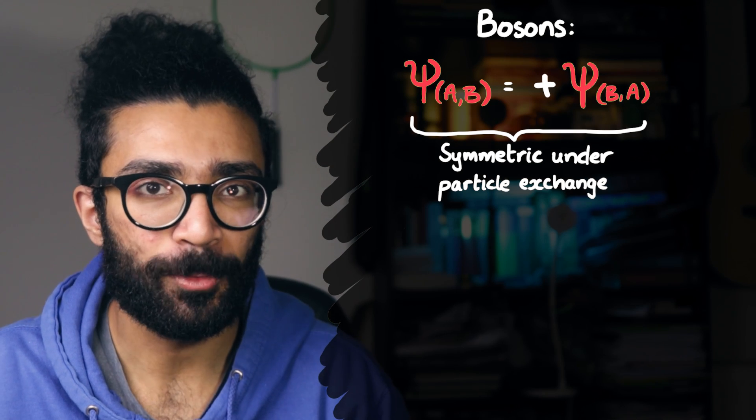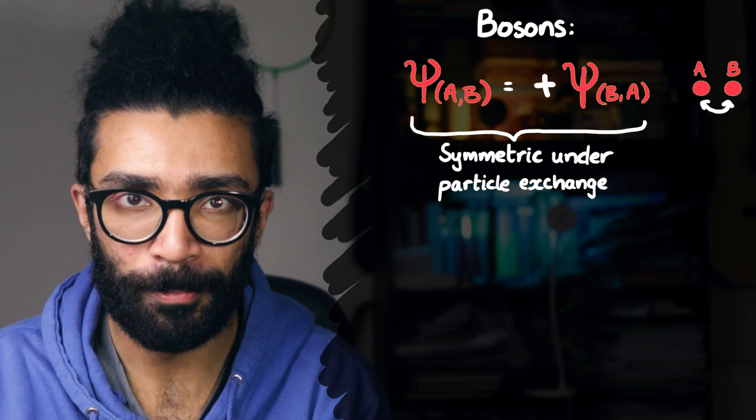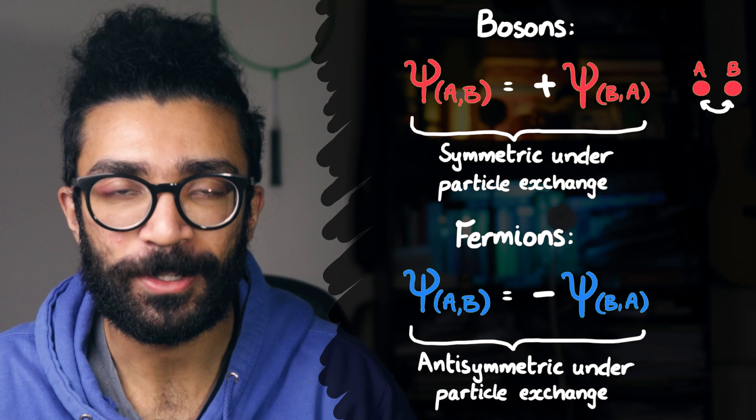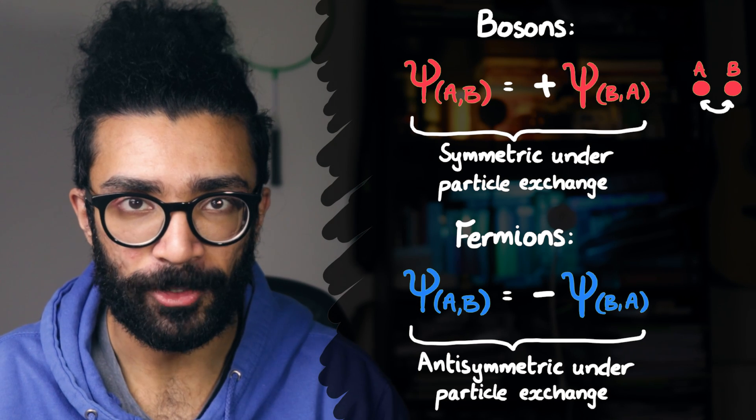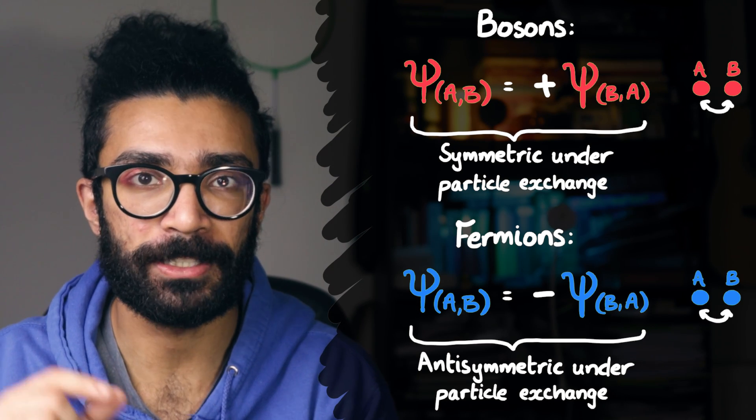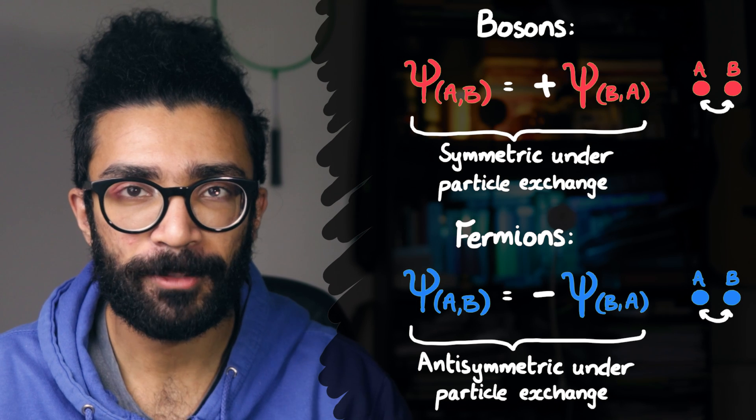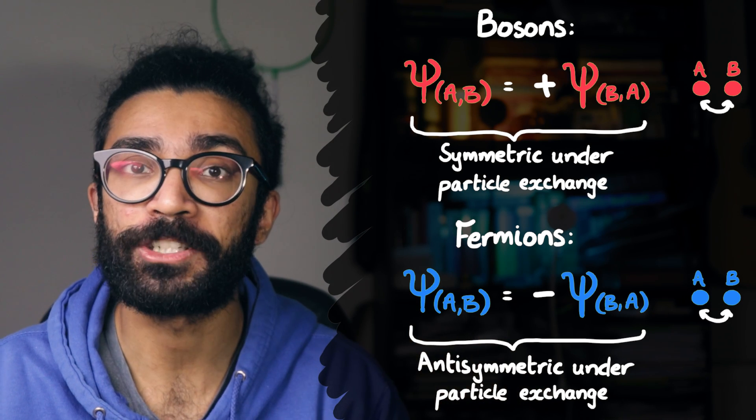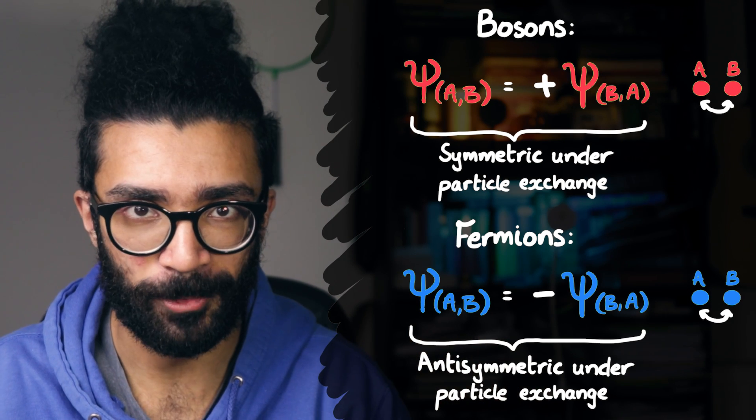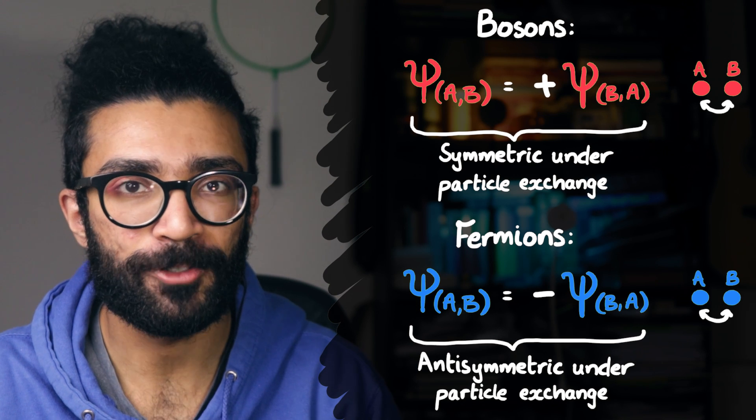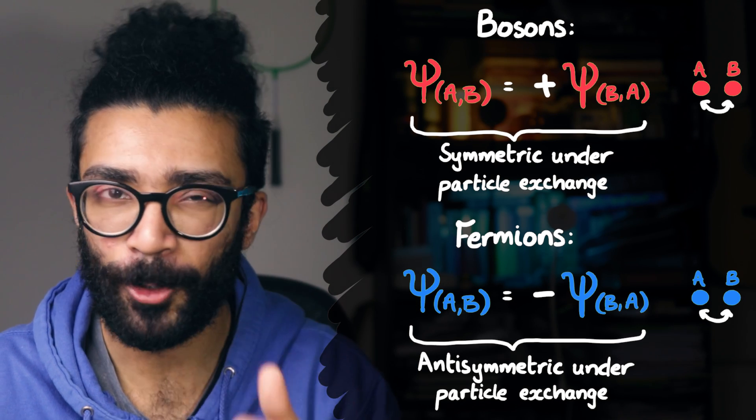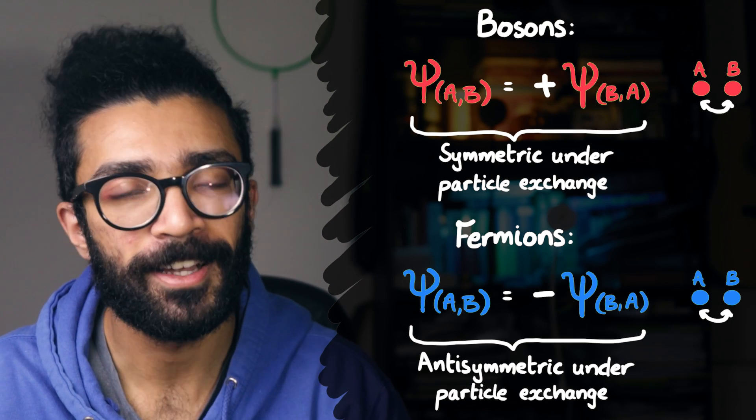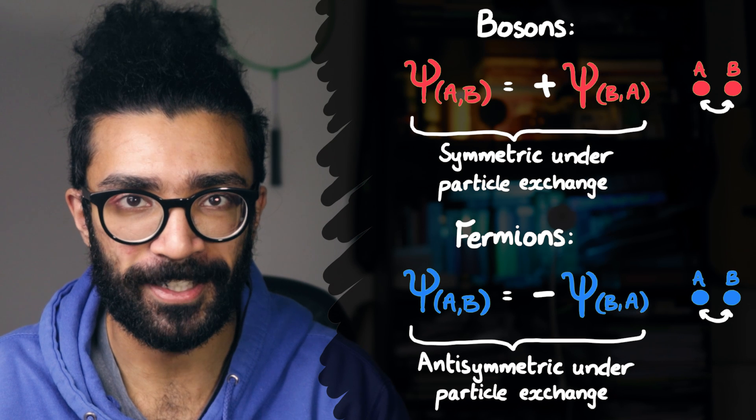With a boson wave function, we basically say that it is symmetric under particle exchange. What this means is that the wave function is identical when we swap particles. Whereas with fermions, we say that the wave function is anti-symmetric. Basically means that when we swap the particles, the wave function becomes negative. The fact of the matter is that a symmetric wave function behaves differently to an anti-symmetric one. And this is the crux of the difference between bosons and fermions, and we'll be focusing in on the behavior of bosons in order to understand the Bose-Einstein condensate.